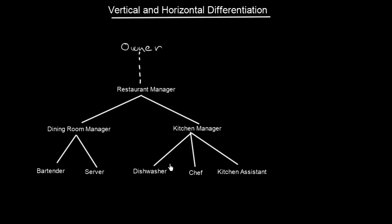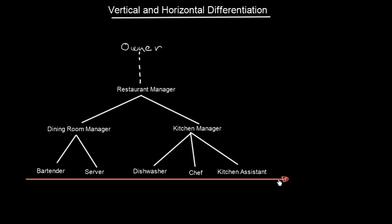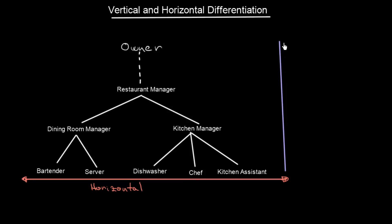Here we have drawn a sort of hierarchical structure within this organization. When we look at it, we start to see two dimensions. We have a horizontal dimension over here — let's call it the horizontal dimension — and then we have another one, which is, of course, the vertical dimension.